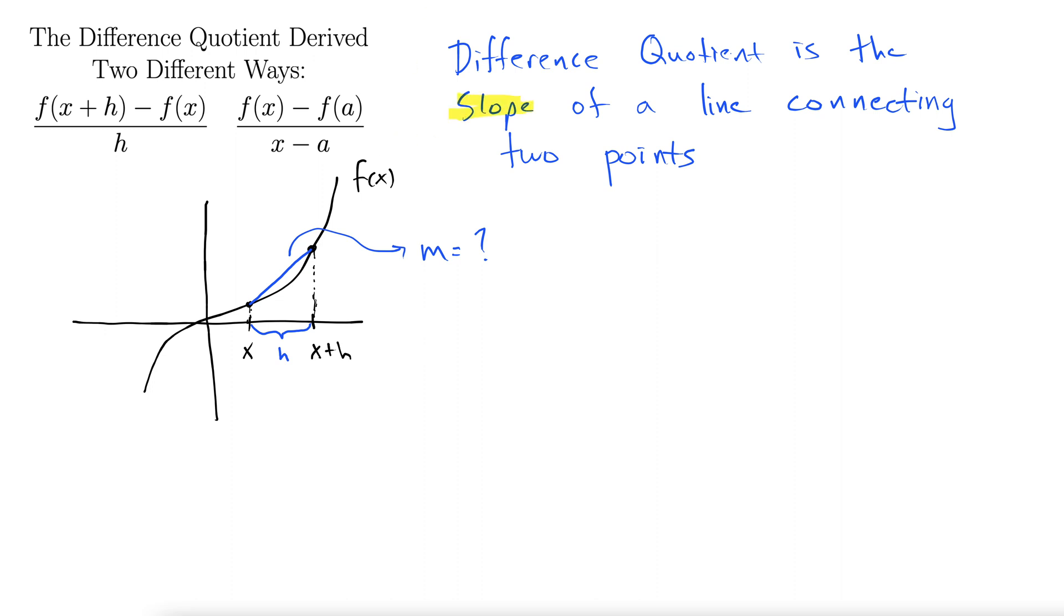So we know how to take a slope. It's the same slope that we learned in algebra one. It's rise over run. So we'll do y2 minus y1 over x2 minus x1. That's all it is. We need to get our y values here. So let's follow those x values up and get some y values.